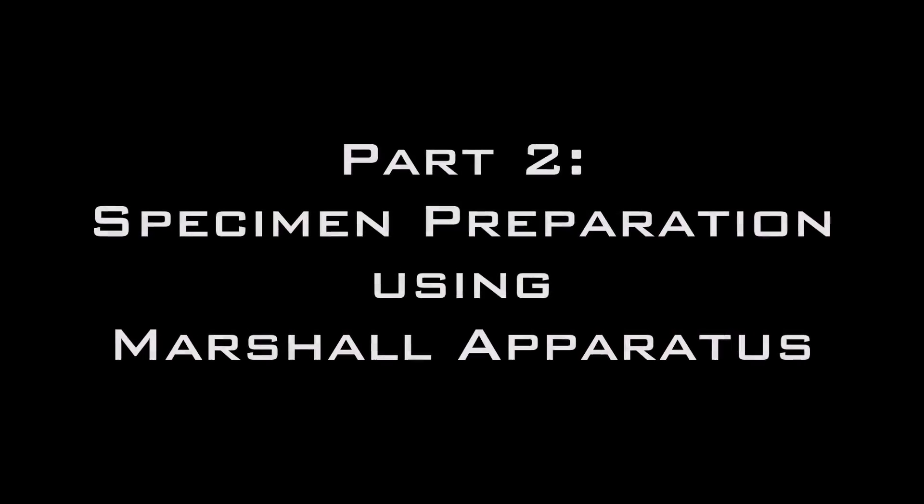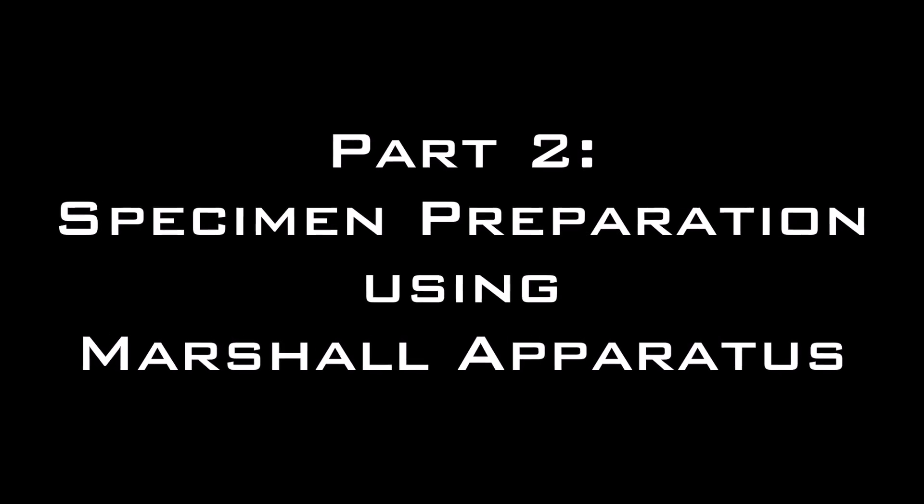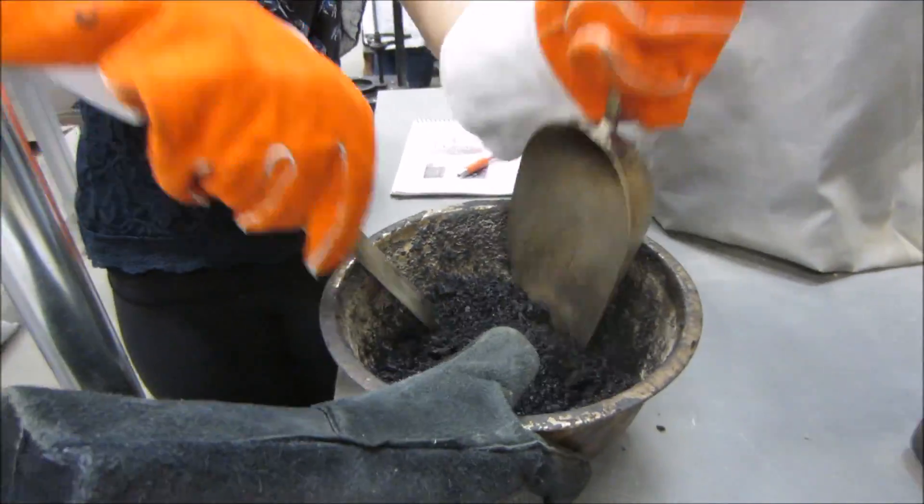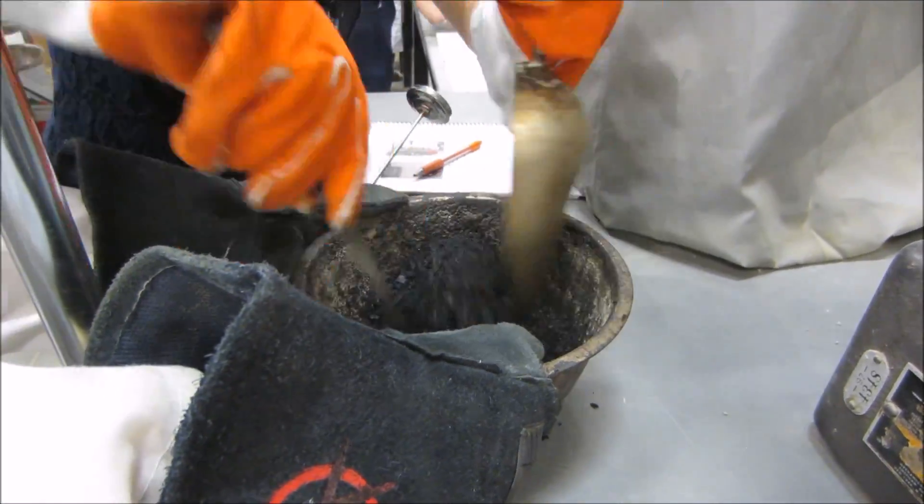This portion of the experiment will involve preparing an asphalt paving specimen. Take the pre-prepared oven dried aggregate and asphalt binder out of the oven and mix until the asphalt coats the aggregate thoroughly.